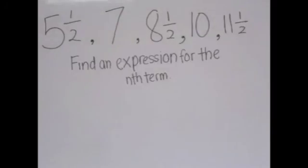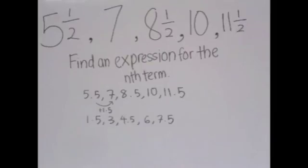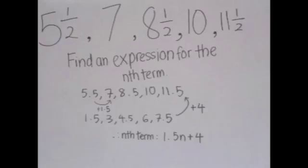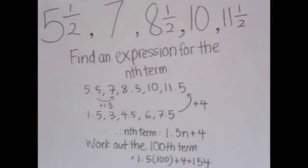For this question, we will need to find the nth term. First, we find the difference between the numbers of the sequence, which is 1.5, so we write the sequence of 1.5 below it and see how the sequences relate. It is plus 4, so the nth term would be 1.5n plus 4. The question also asked for the 100th term, so we insert 100 into n to get the answer, which is 154.